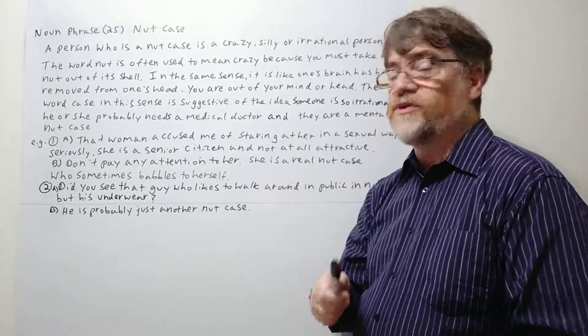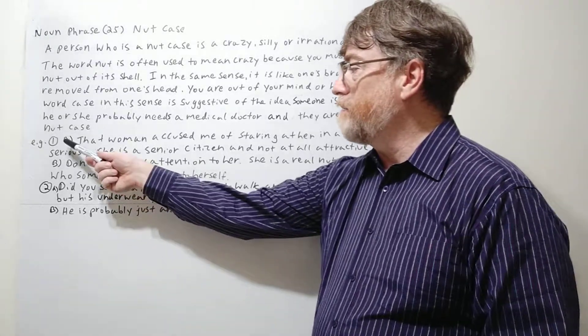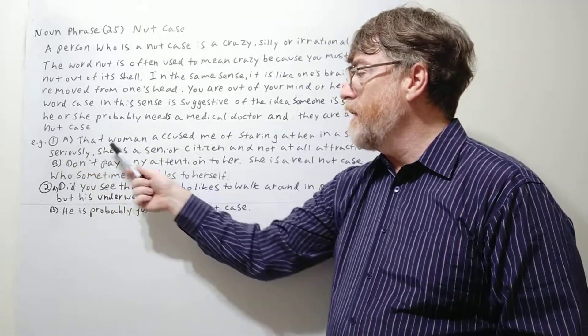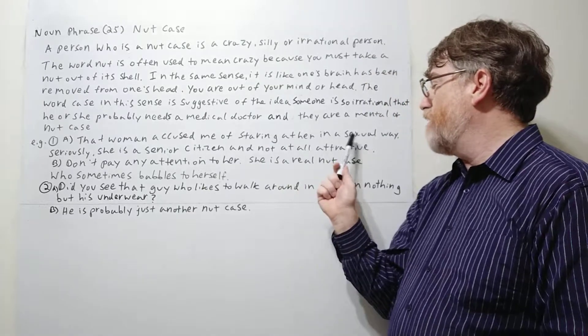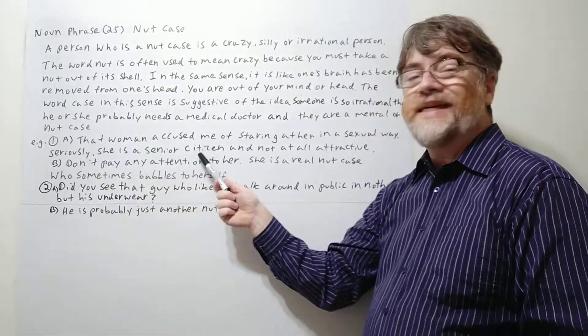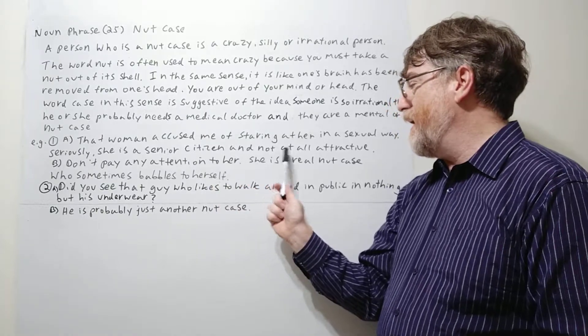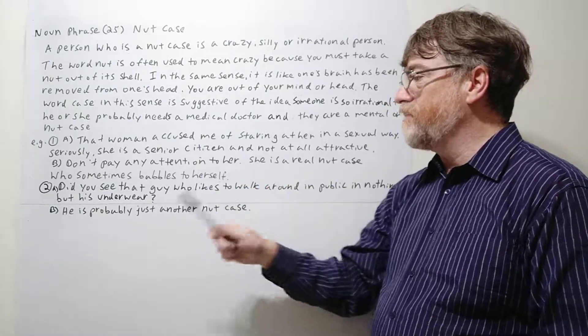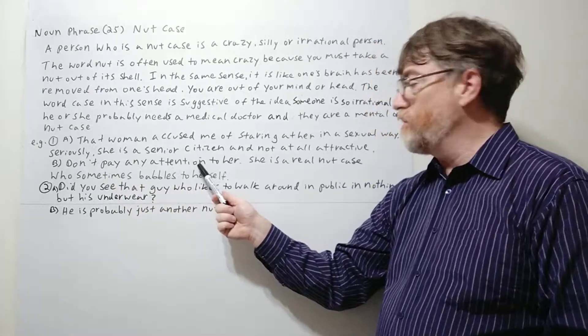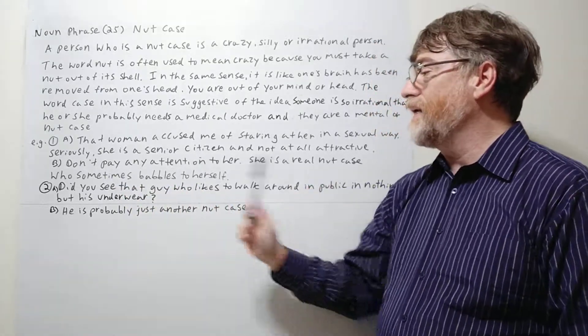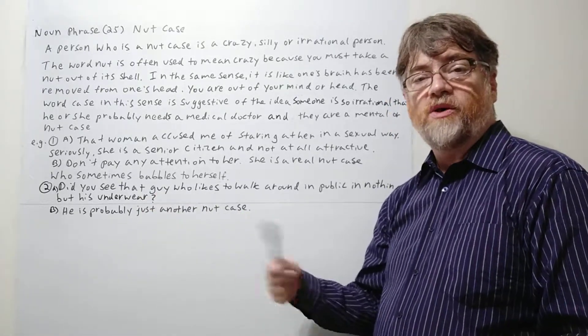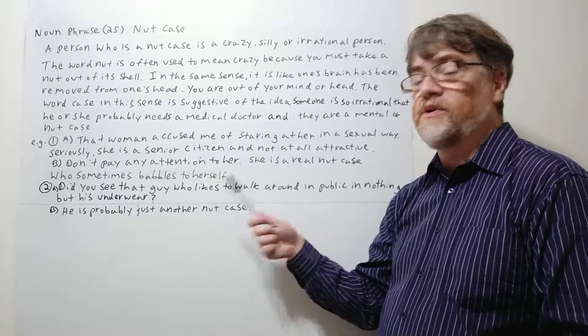Let's take a look at the first example here. Both of these are A-B parts. That woman accused me of staring at her in a sexual way. Seriously, she is a senior citizen and not at all attractive. And then of course B would say don't pay any attention to her. She is a real nut case who sometimes babbles to herself.